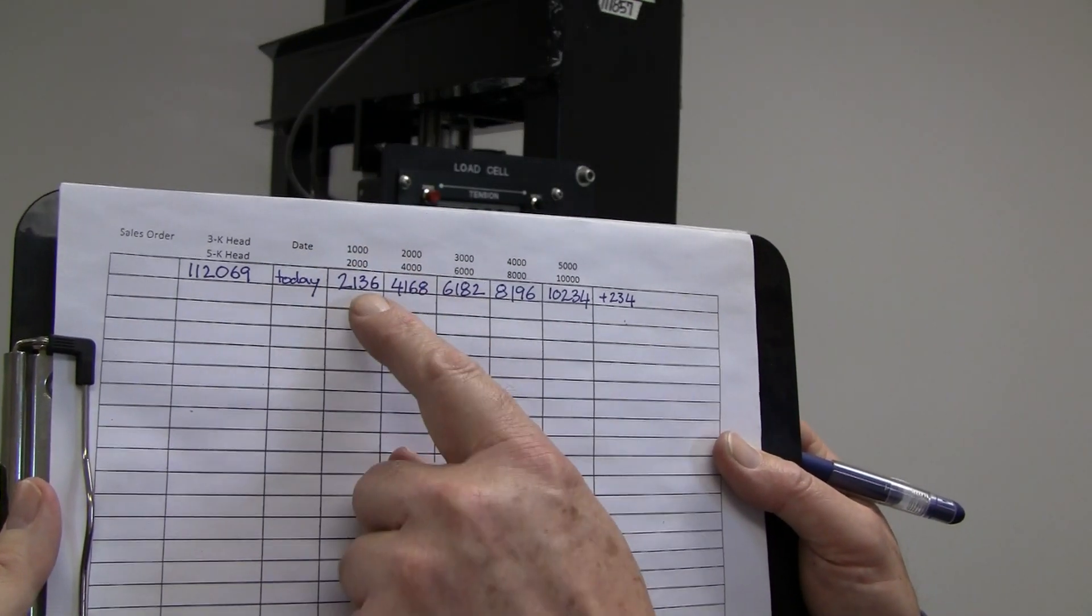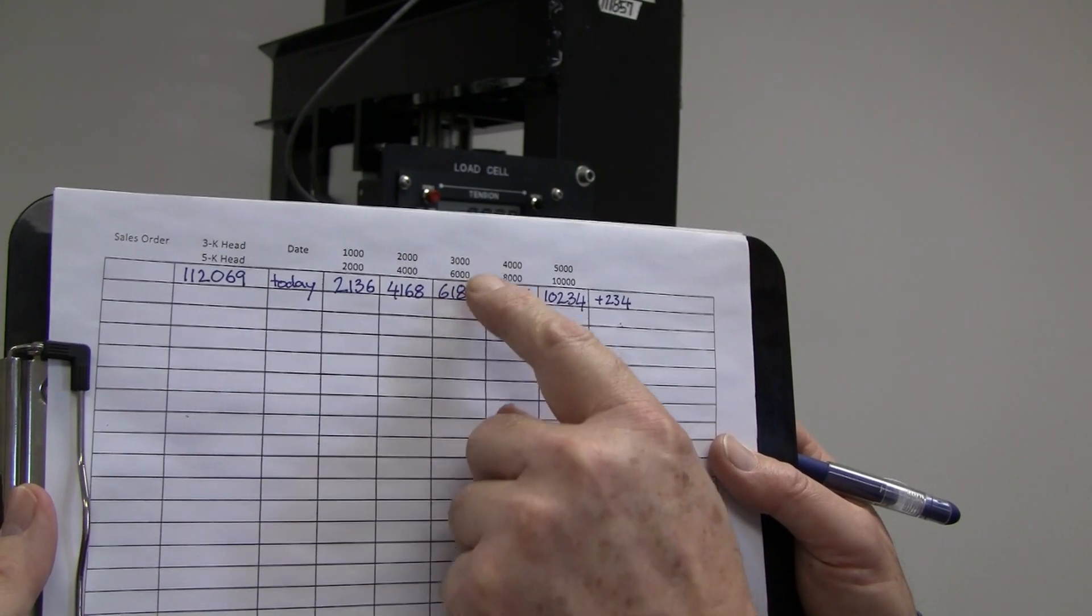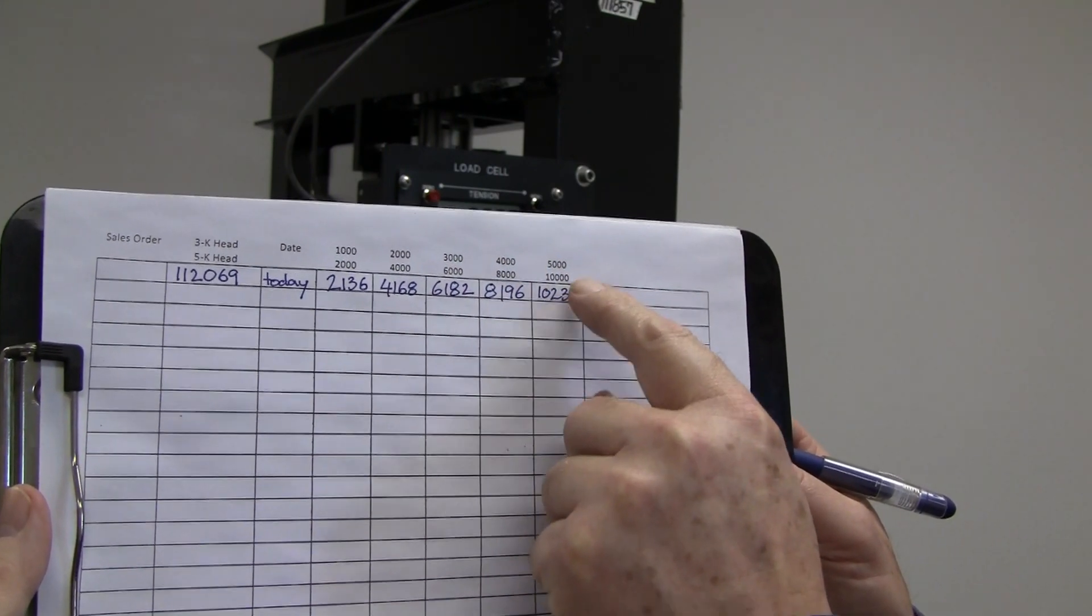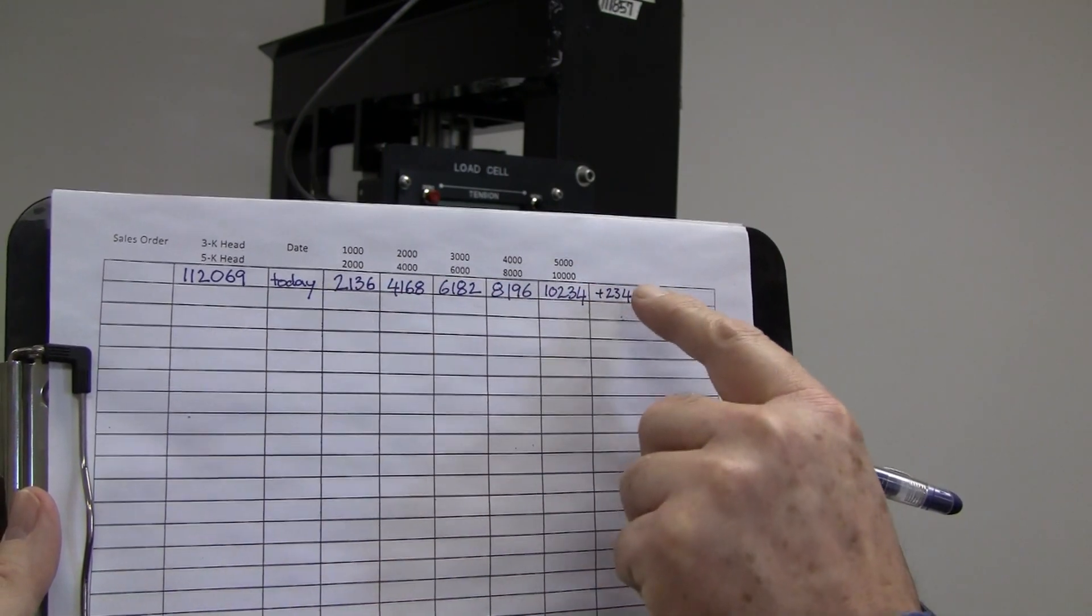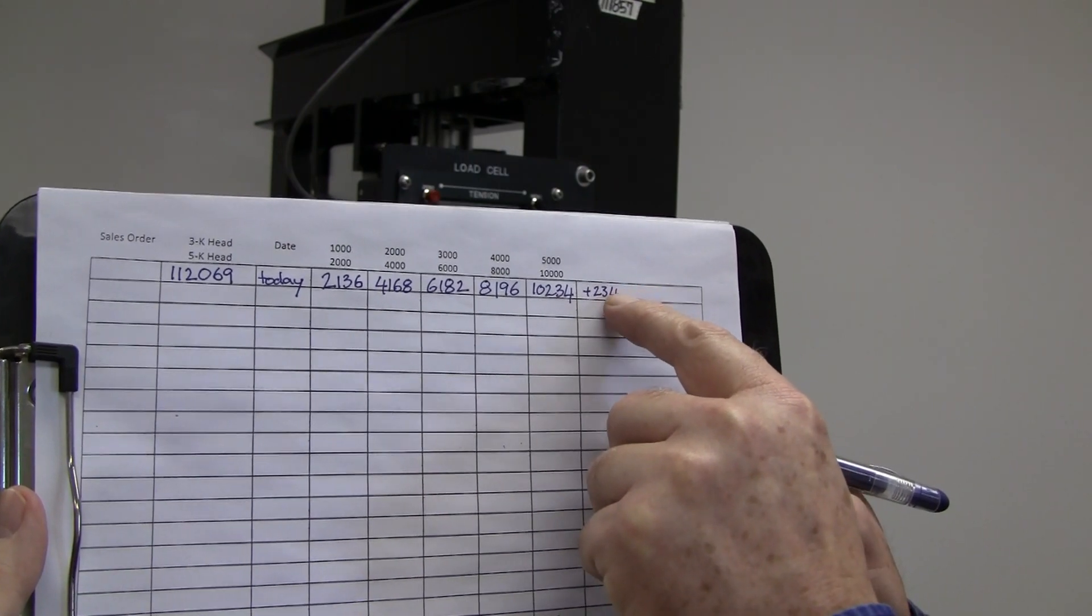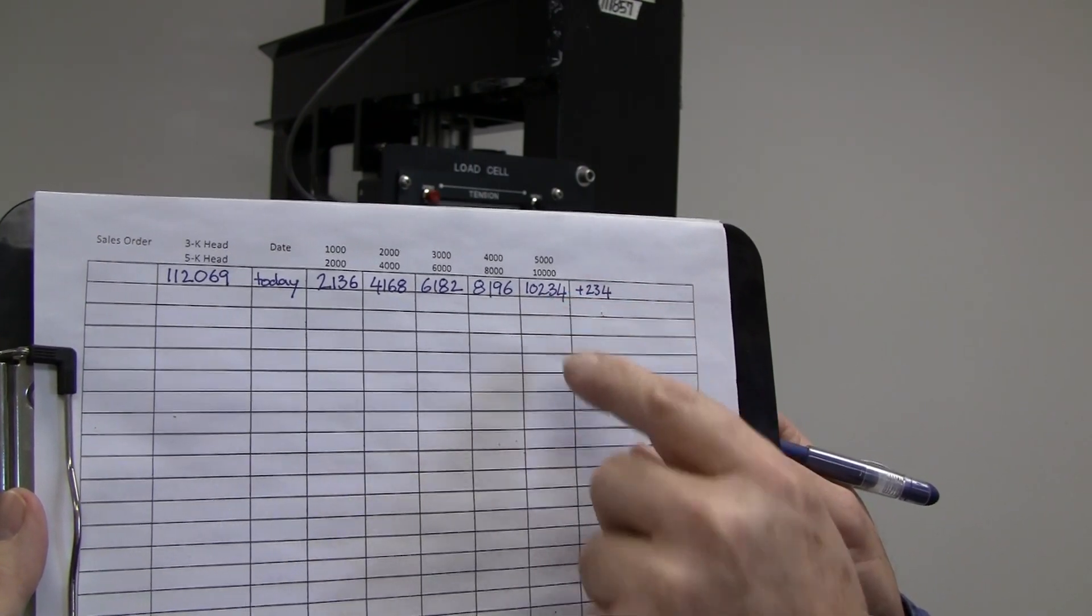Looking at the recorded numbers in this example shows that the variance is quite consistent across the range and that the difference at the maximum pressure is 234 pounds at 10,000 or 2.3%.